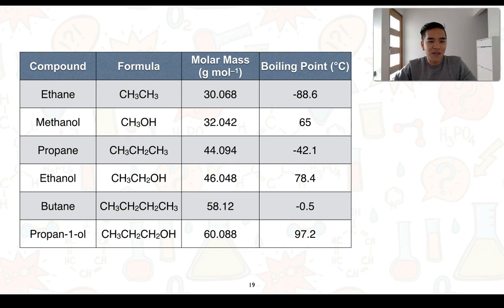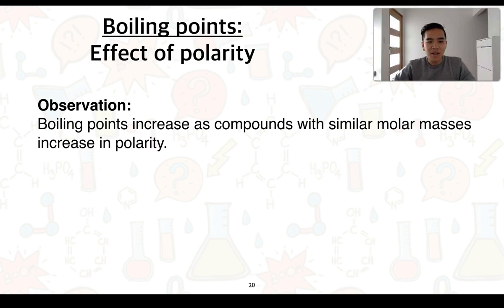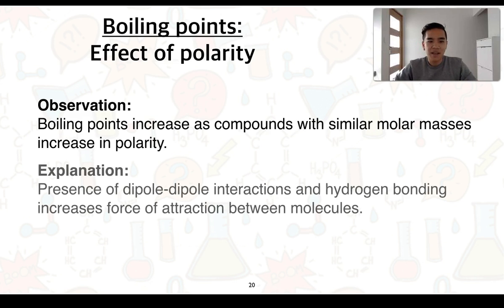On this slide, I've compared a range of alkanes with an alcohol of similar molar mass — for example, ethane versus methanol. Their molar masses are quite similar, but there is a pretty significant difference in boiling points, and you'll notice similar patterns with the other combinations as well. The observation is that boiling points increase as compounds with similar molar masses increase in polarity — alkanes being non-polar, alcohols being polar. The explanation is that there is a presence of dipole-dipole interactions as well as possibly hydrogen bonding that increases the force of attraction between molecules.